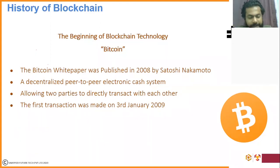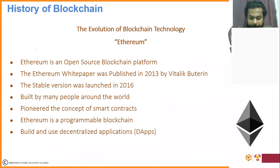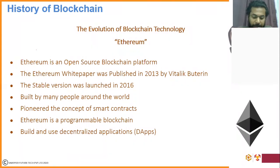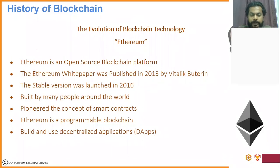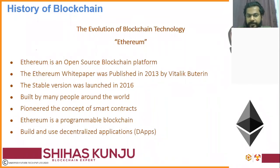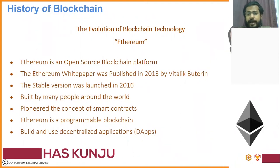Whenever there is a successful technology, it always has the potential for evolution — it always evolves and becomes better. From Bitcoin, there was this guy you see on the right-hand side — Vitalik Buterin. Bitcoin had a lot of potential because you are able to create an ecosystem where people are able to directly do transactions between each other, and it has good value because of the blockchain technology backing it.